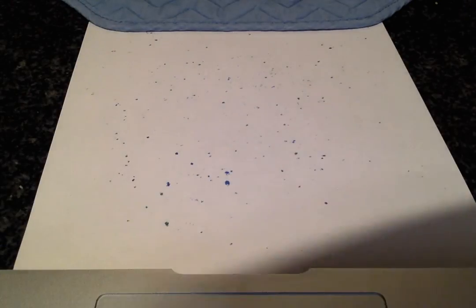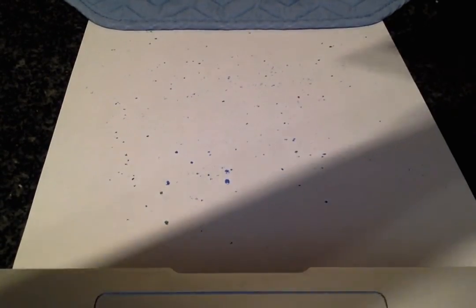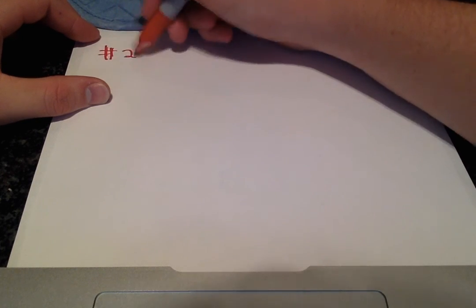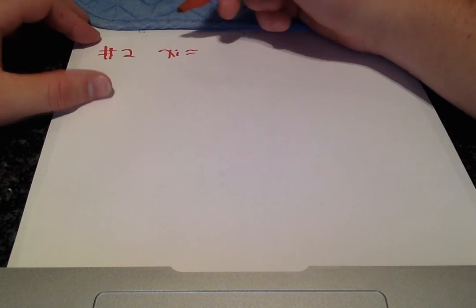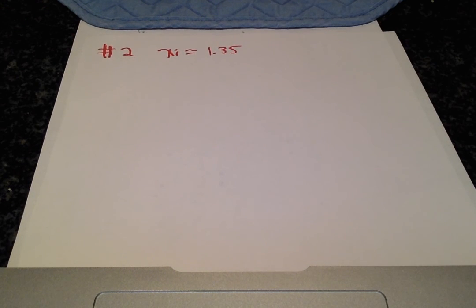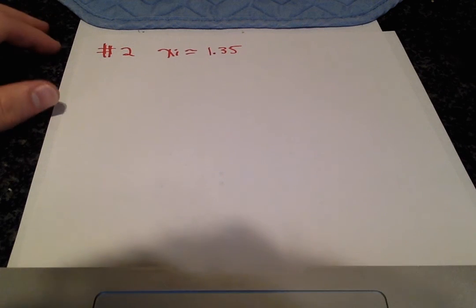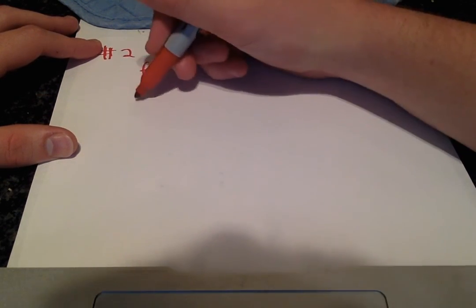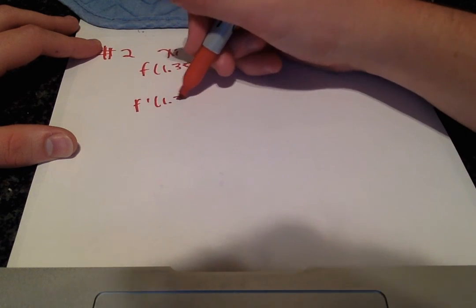Okay, moving on. We will now set our new xi value to the approximation we just got. So for our second iteration, xi is going to be the 1.35 that we just got. So we need to calculate f of 1.35 and f prime of 1.35.